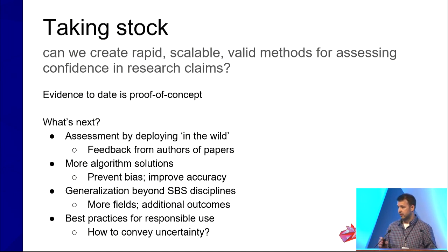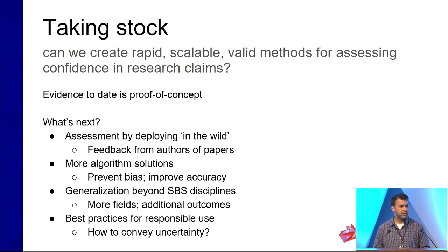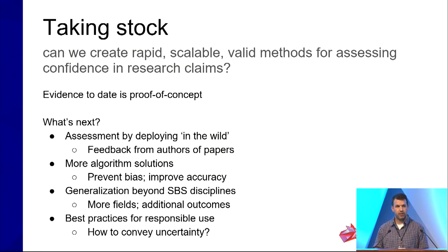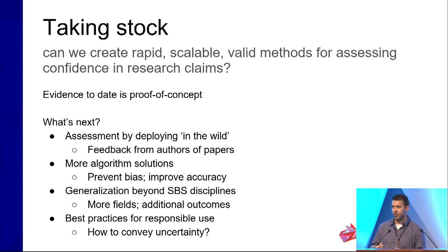How do we take stock from where we are right now? Back to that motivating question: can we create these rapid tools? The evidence right now suggests there's a little bit — there's some proof of concept. We're able to deploy this and see some indication that it's better than chance. But we really need to keep further investing in this. Besides releasing some of this information, we want to get user feedback — how would you feel if you submitted a paper and we scored it? And there's more than just the scores, including rationale behind the score and explainability, which is also important.